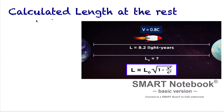We have this example: a ship is traveling with a speed of 80% of the speed of light, and the length between the two planets is 8.2 light years. This length is measured from the ship, and we want to know what the length is as calculated by an observer on Earth.